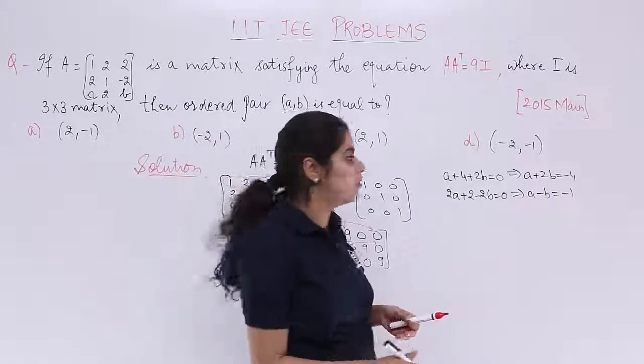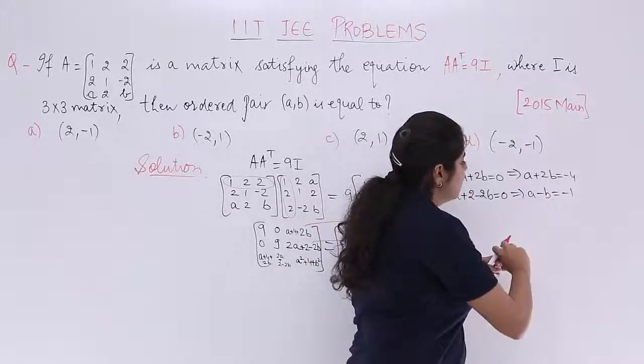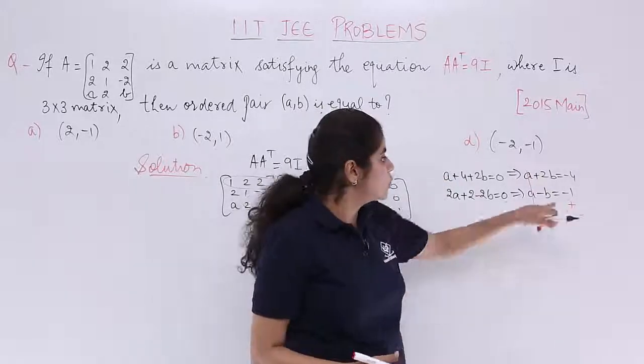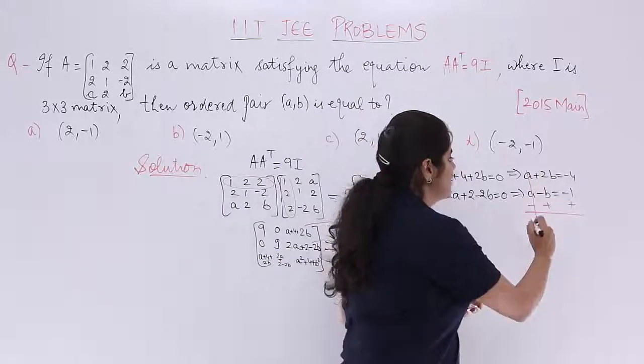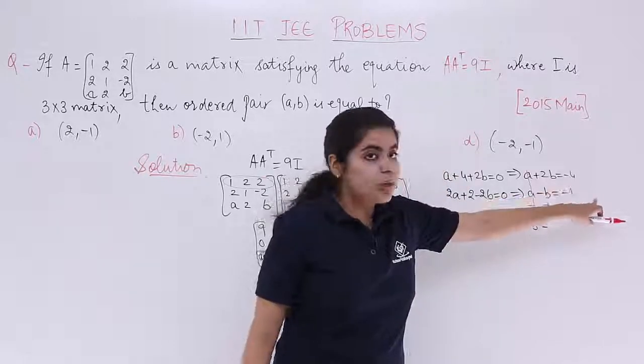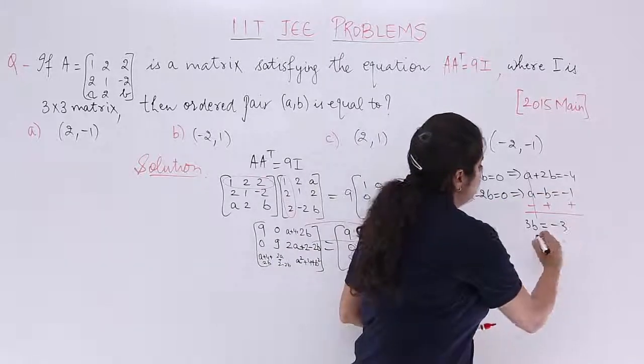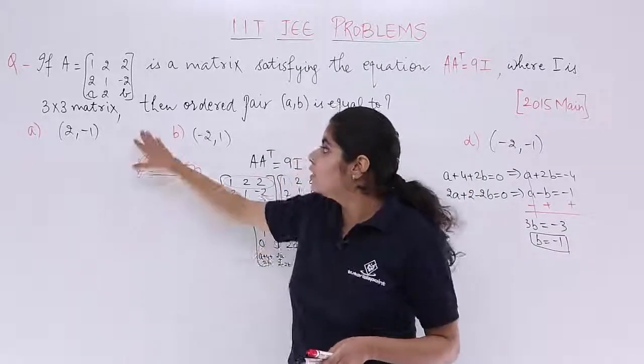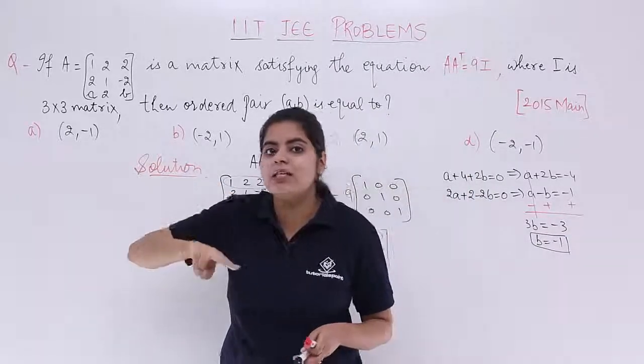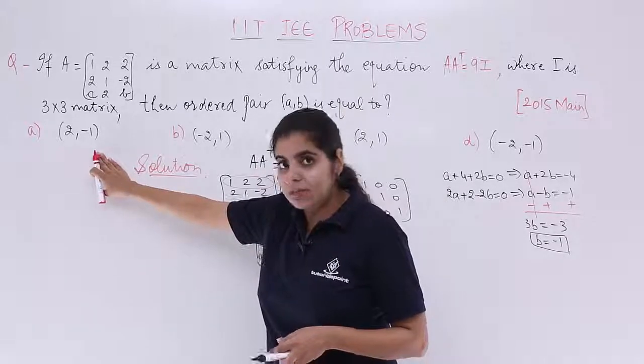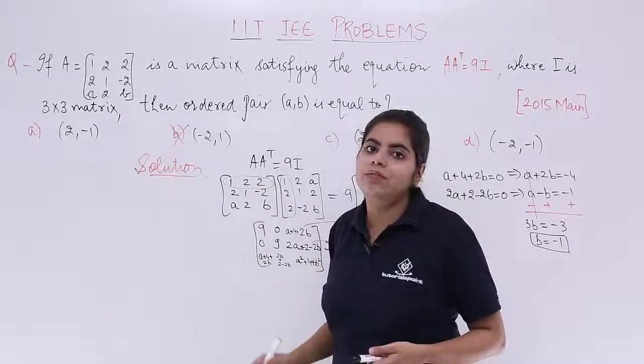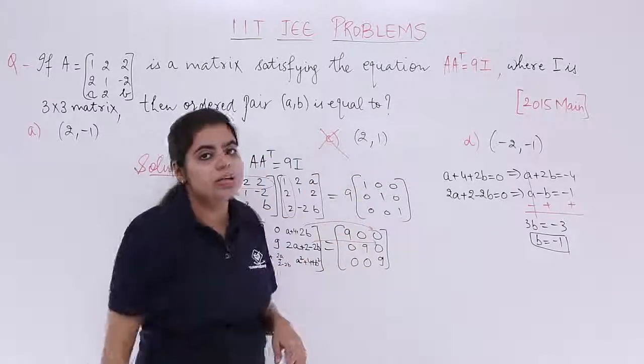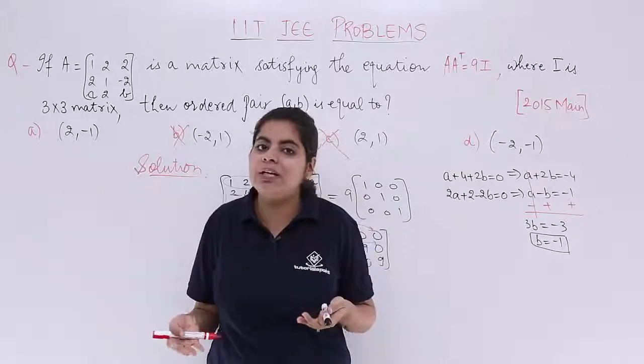So if I subtract these equations, A and A cancels out. 2B plus B is 3B. Minus 4 plus 1 is minus 3. So B is equal to minus 1. Which option has in the ordered pair form the second thing as minus 1? Option A has the second thing, that means B, as minus 1. Option B does not have it, it has 1. So it is not the answer. Option C again has 1. Not the answer. So you are confused between option number D and option number A.